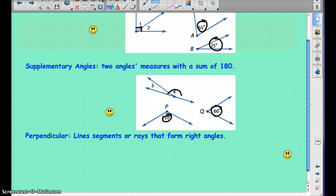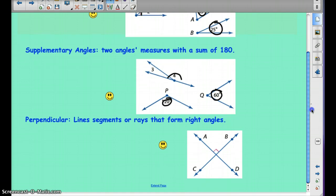And our last vocabulary word is perpendicular segments or rays. Perpendicular means line segments or rays that form a right angle. So when they intersect, they're going to make a right angle. And the only way you know that is if it's given to you, if it says it in the directions, or if it makes this little box here, if that little box is there. You can't assume that they're perpendicular just because it looks like it. It has to be given. It has to have this little box here. Again, pause the video when needed.